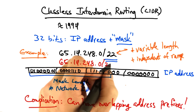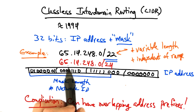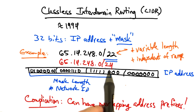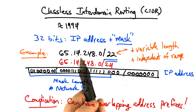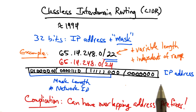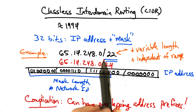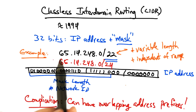Of course, now the complication is that it's possible to have overlapping address prefixes. For example, 65.14.248.0/24 overlaps with 65.14.248.0/22. The red prefix is actually a subset of the black one. So supposing these two entries both show up in an internet routing table, what are we supposed to do?